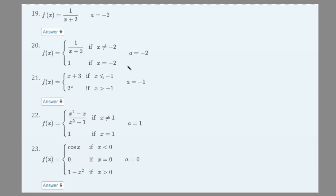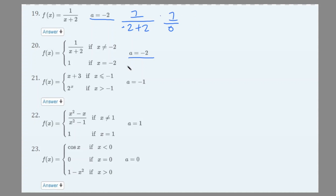Let's try these questions. Number 19: f(x) = 1/(x + 2), and a equals negative 2. We need to figure out why the function isn't continuous at the given a value. If we plug in: 1 over (negative 2 plus 2) gives us 1 over 0, which is undefined. So we can conclude that at a equals negative 2, it isn't continuous — it could be a vertical asymptote.